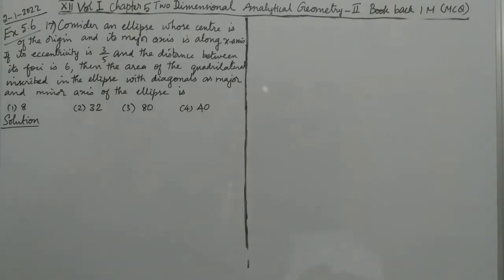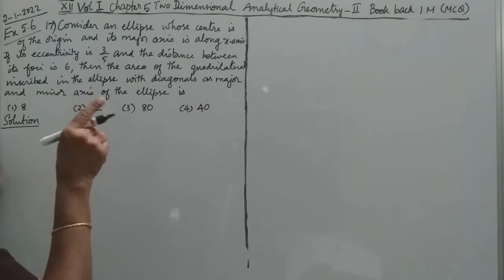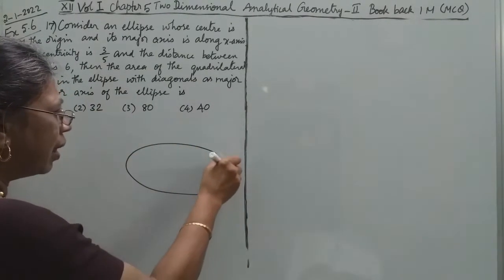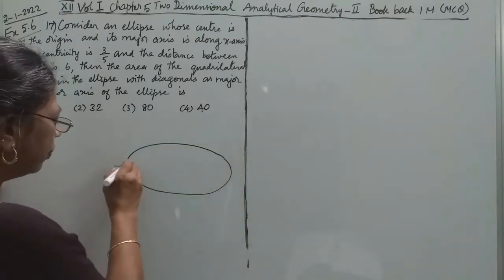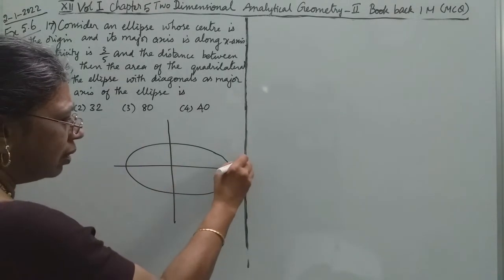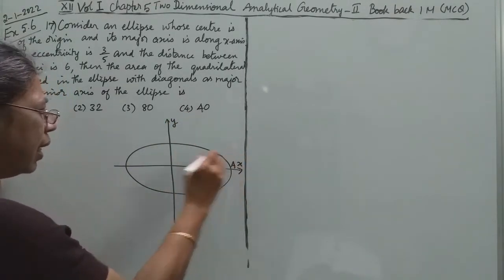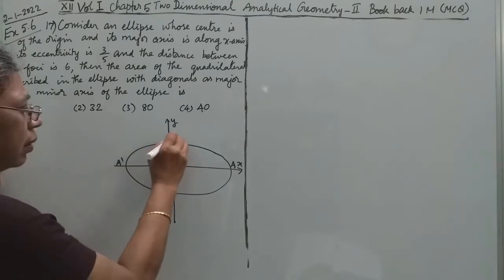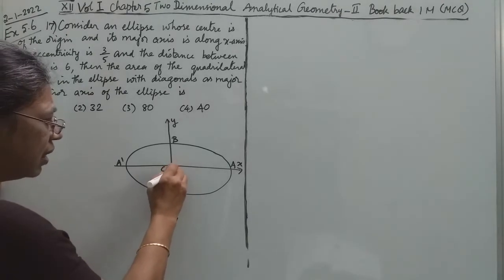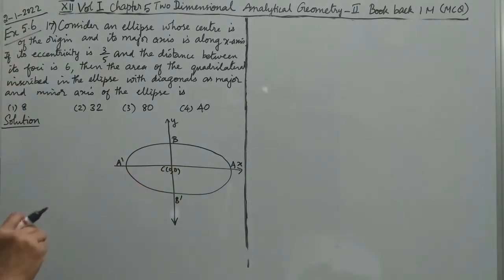First of all, the ellipse has center at the origin, the major axis is along x-axis. Now the diagram is with the horizontal major axis, the center at the origin and the major axis is along x-axis.